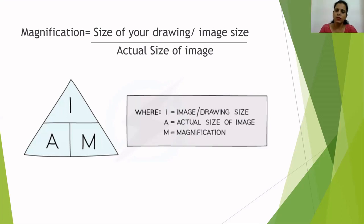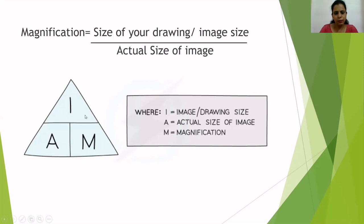What is magnification? For example, you have a small real specimen and on paper you also have the image of that specimen. Magnification tells you how many times the image has been enlarged compared to the actual size. We also have a triangle to remember the formula: I represents image or drawing size, A represents actual size, and M represents magnification. So M = I ÷ A.